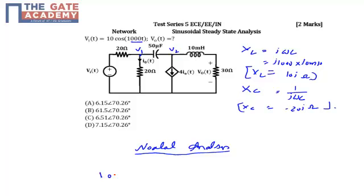So my equation is: 10 minus V1 upon 20 which is equal to V1 by 20 plus V1 minus V2 by minus 20J.